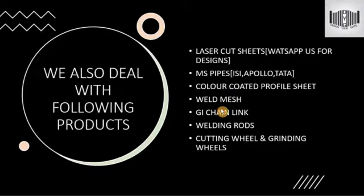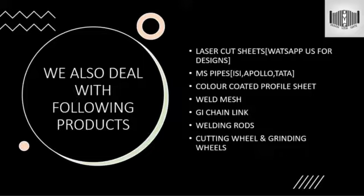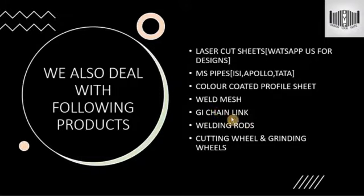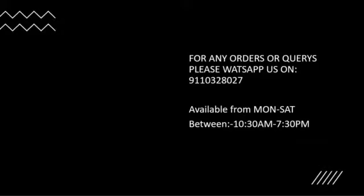We also deal with laser cut sheets in running sizes: 1x3, 1x4, 1x5, 1.5x4, and 2x5 feet. For specific custom designs, WhatsApp us with your design and rates will be quoted accordingly. We also deal with MS pipes from Apollo, Tata, and ISI-certified brands, color-coated profile sheets from AMNS, General, JSW, Color One Plus, and Tata, and we carry weld mesh, GI channeling, welding rods, cutting wheels, and grinding wheels. For any orders or queries, please WhatsApp us.